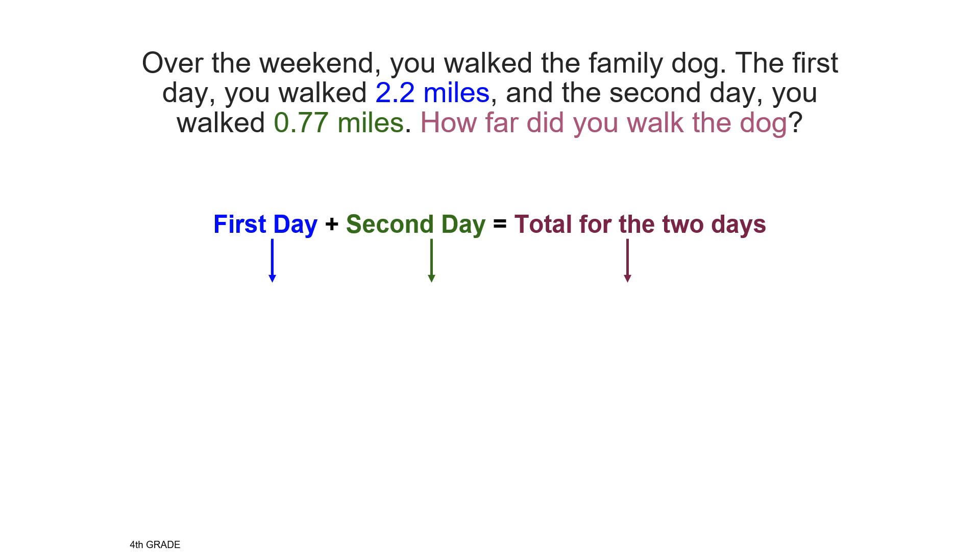Take a moment to estimate first. To solve this problem, I am going to add the distance for the first and second day to get the total. 2 and 2 tenths miles is close to 2. And 77 hundredths miles is close to 1. 2 miles plus 1 mile gives me a total of 3 miles. Our exact answer should be close to 3 miles.